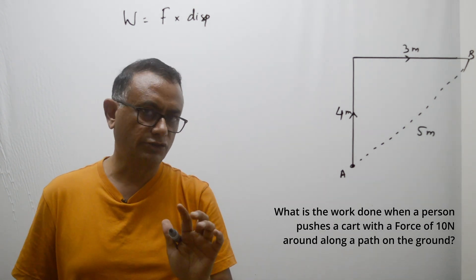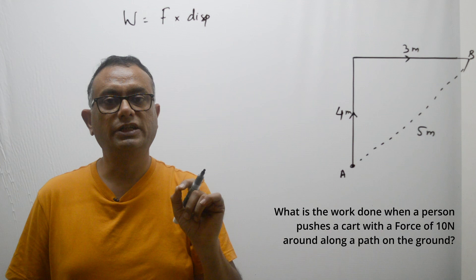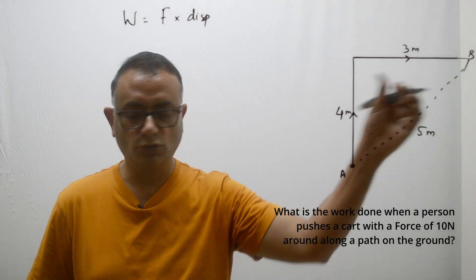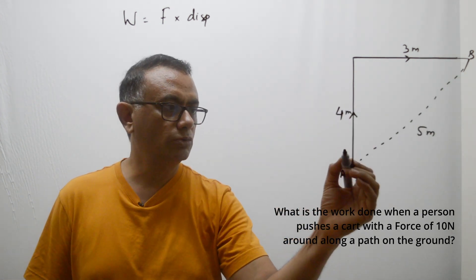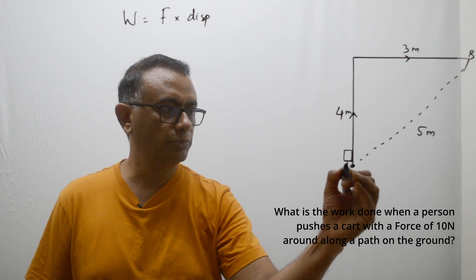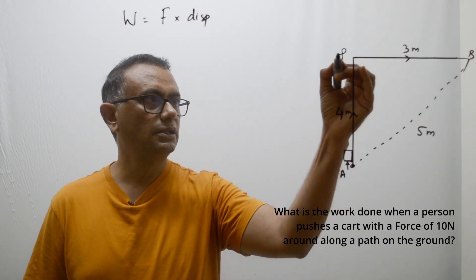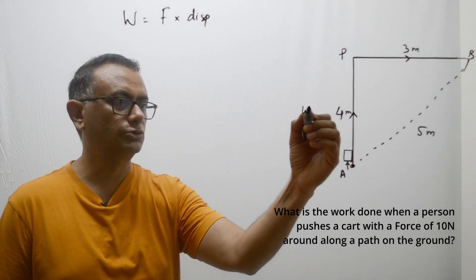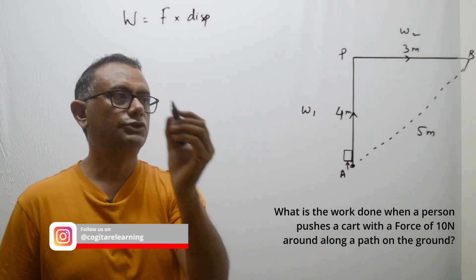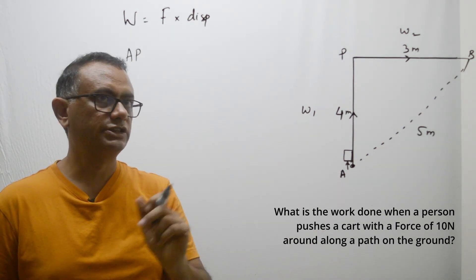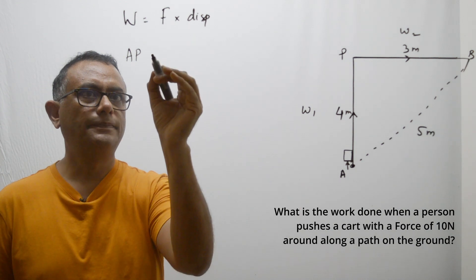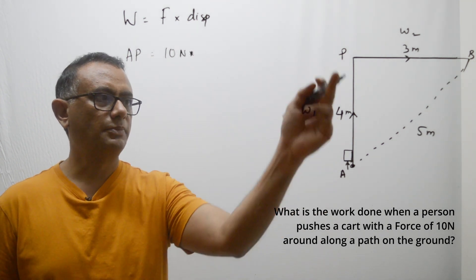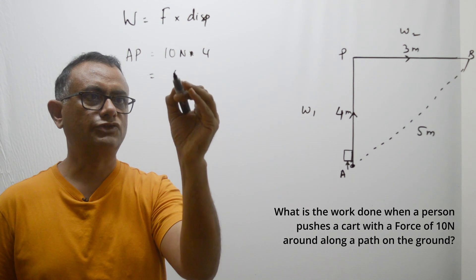But if we use 5 meters for calculating work done, our approach is wrong — this is the misconception. The formula does not work that way. What we actually need to do is compute the work done as the cart is pushed from A to P, then from P to B — breaking it into two parts, W1 and W2. In journey AP, force is 10 newtons multiplied by 4 meters, giving 40 newton-meters.